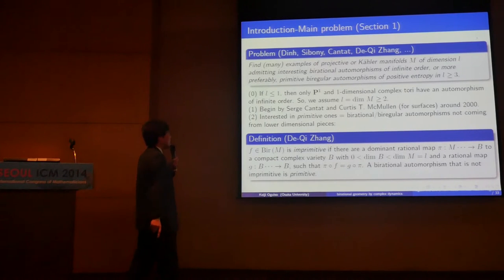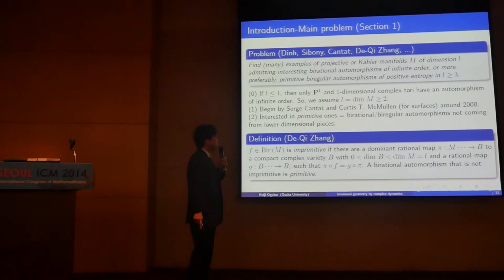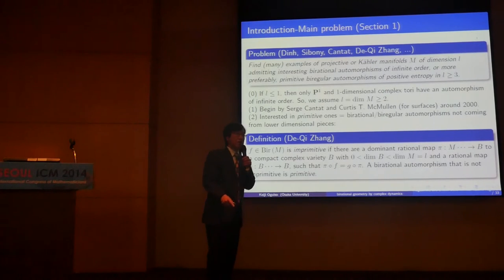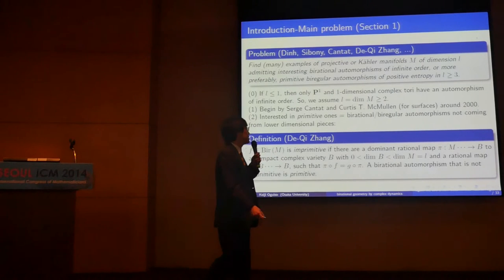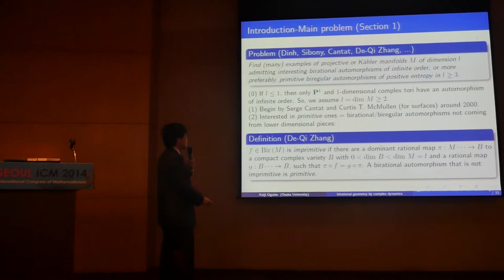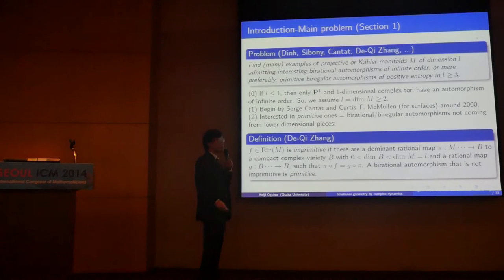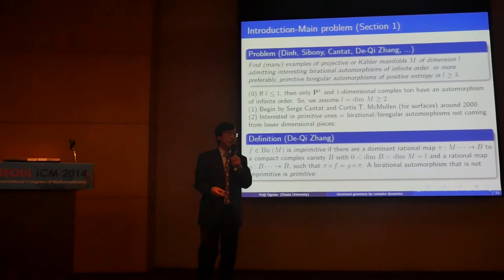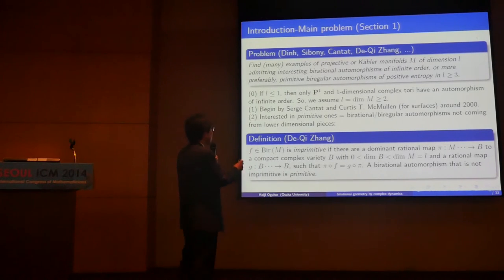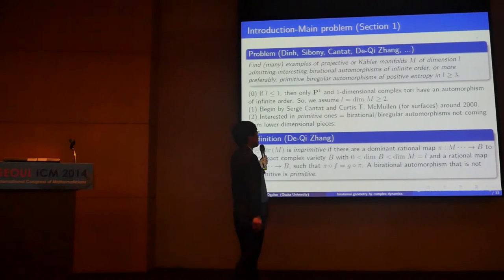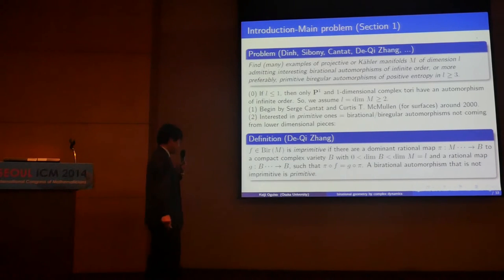I'll explain primitive and positive entropy later, but first I'll explain the primitive condition. A primitive automorphism is, in some sense, an automorphism which does not come from lower dimensional pieces. In other words, primitive means the manifold we are interested in does not admit equivariant rational dominant maps over positive dimensional bases of lower than original manifold dimension.